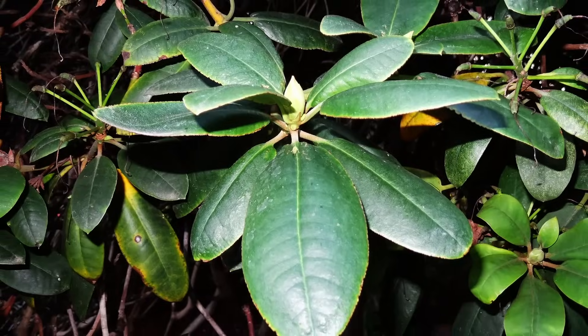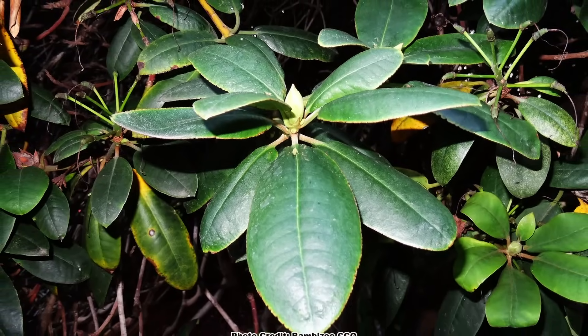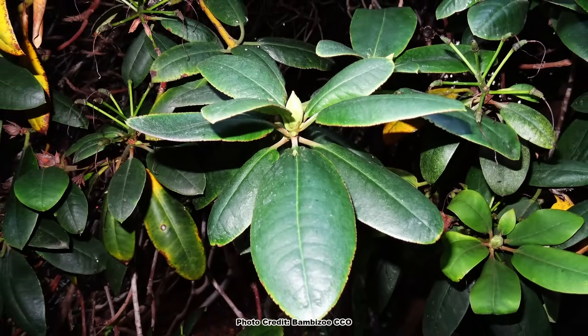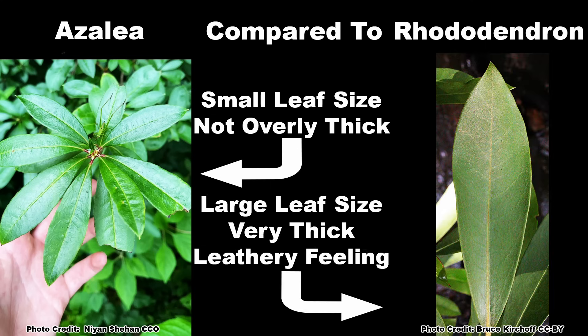There are some noticeable differences in the leaves between the azaleas and rhododendrons. Azaleas have smaller leaves that don't feel overly thick, while rhododendrons have larger, thicker, leathery-feeling leaves.